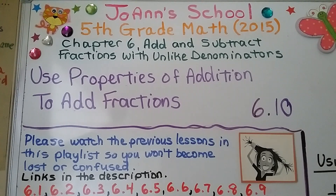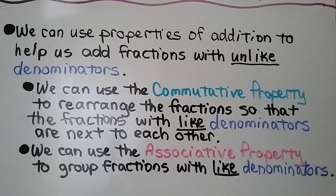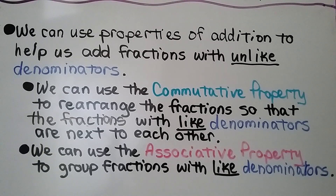Lesson 6.10: Use Properties of Addition to Add Fractions. We can use properties of addition to help us add fractions with unlike denominators. We can use the commutative property to rearrange the fractions so that fractions with like denominators are next to each other, and we can use the associative property to group fractions with like denominators.